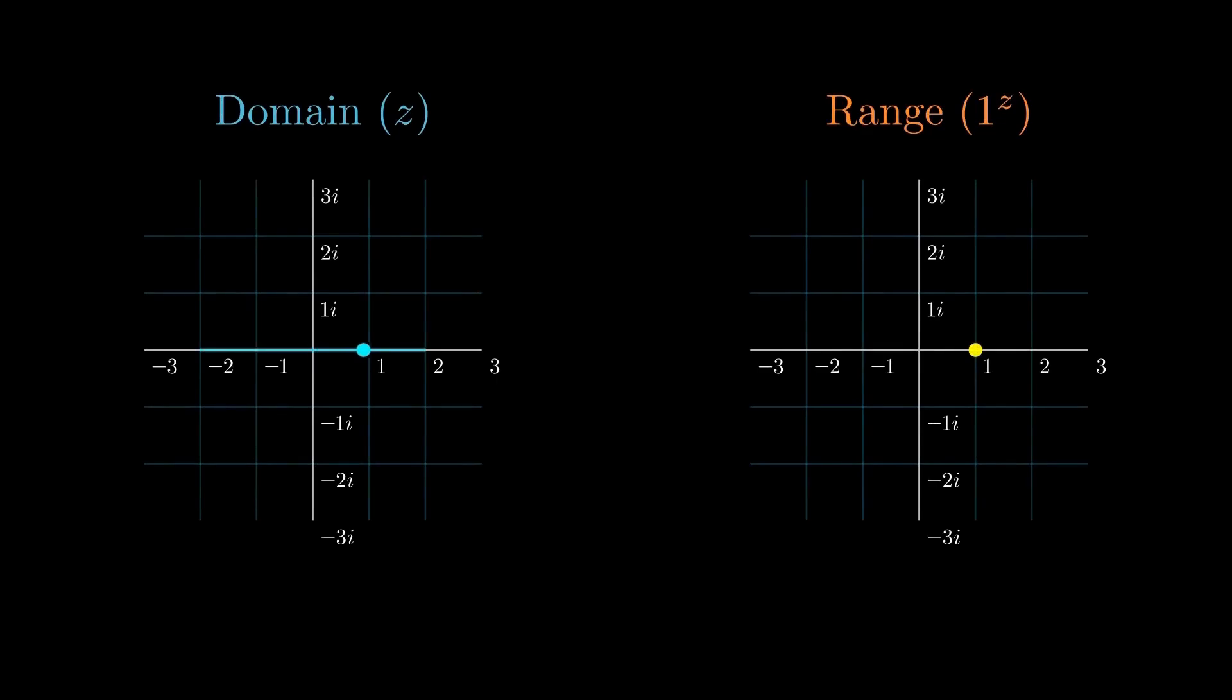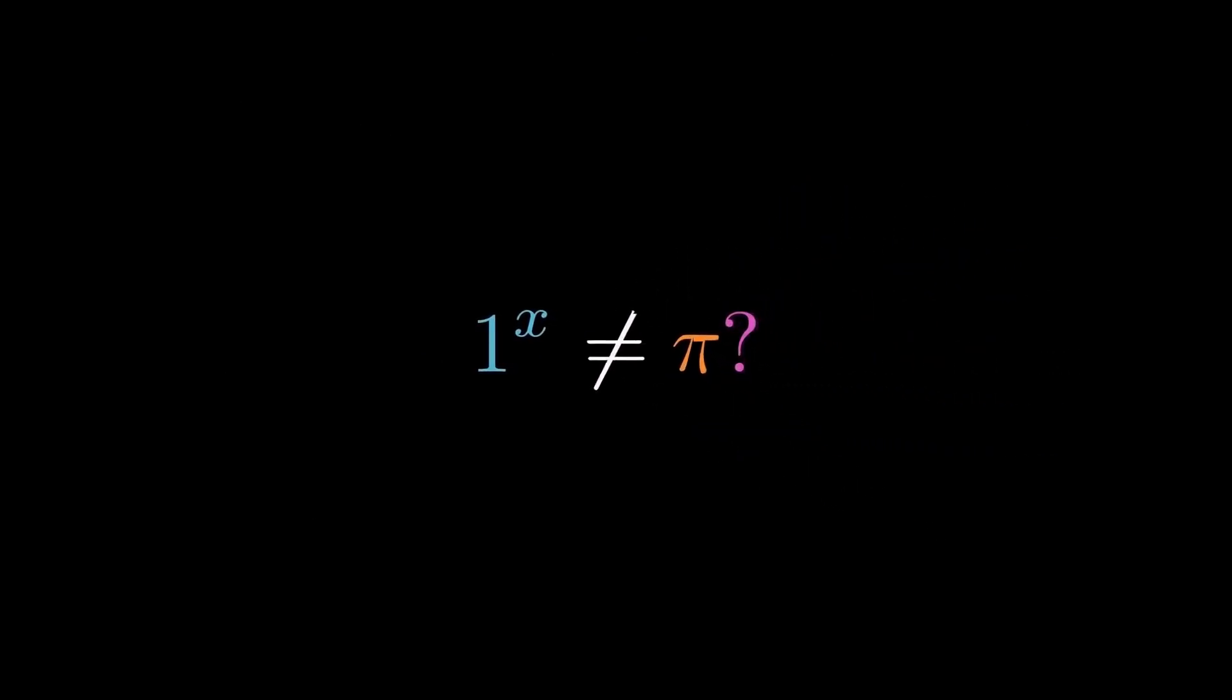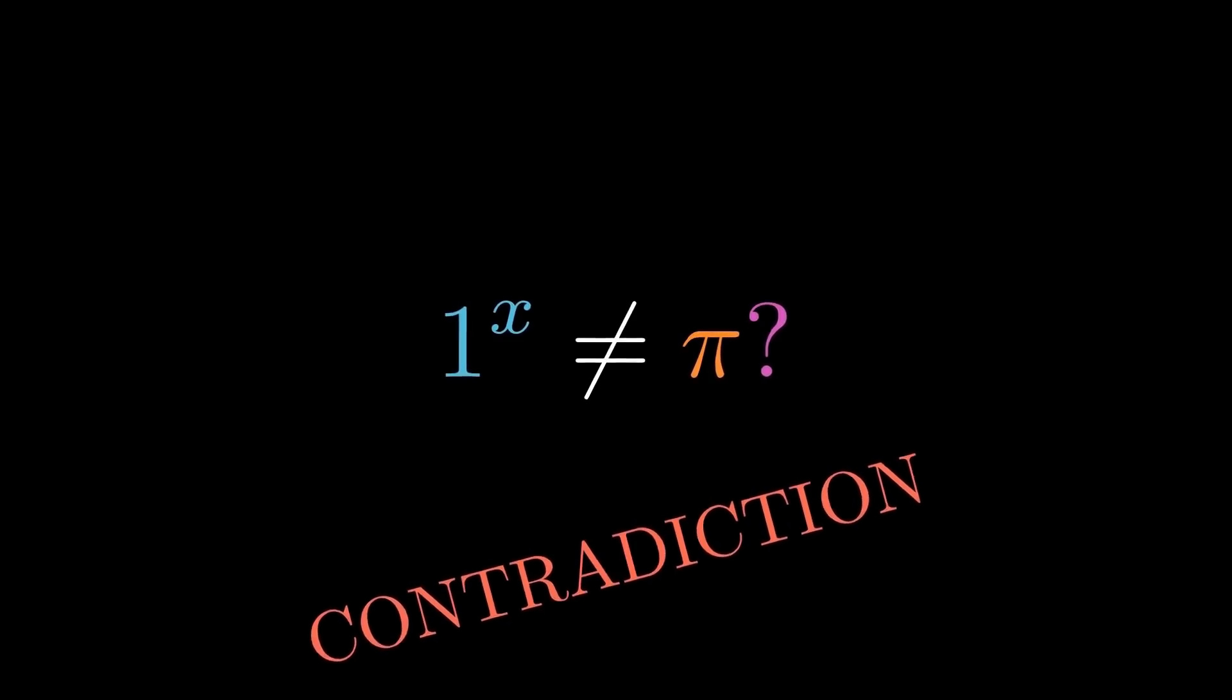Watch the mapping, move z along the real axis, and the output stays stuck at 1, no motion, no growth. That looks exactly like bounded and entire, so it should be constant forever, which would mean 1 to the x can never reach π. Contradiction.